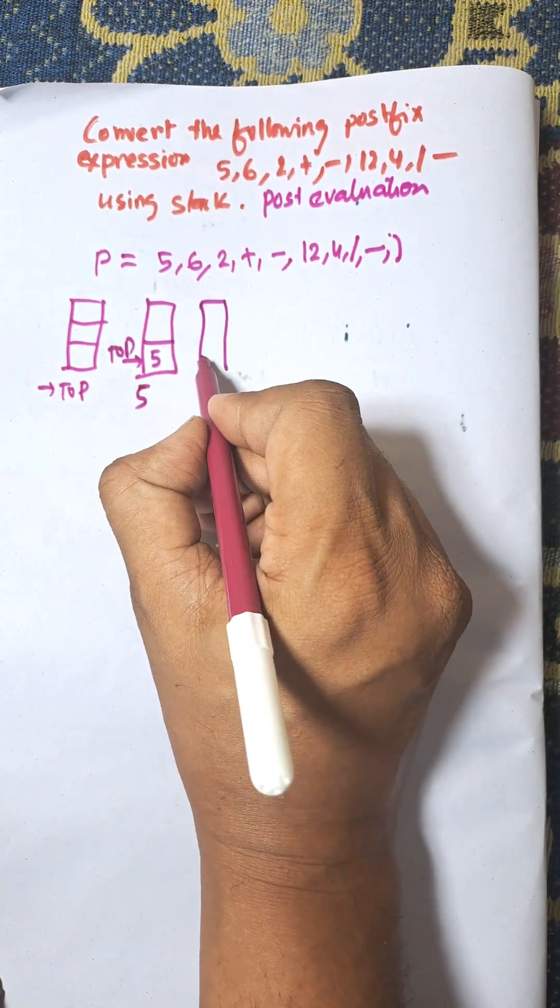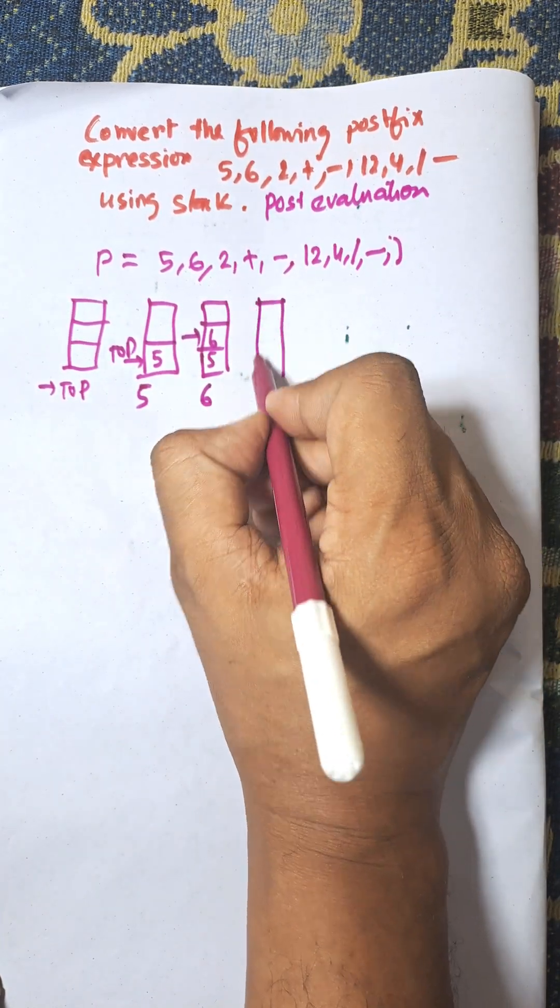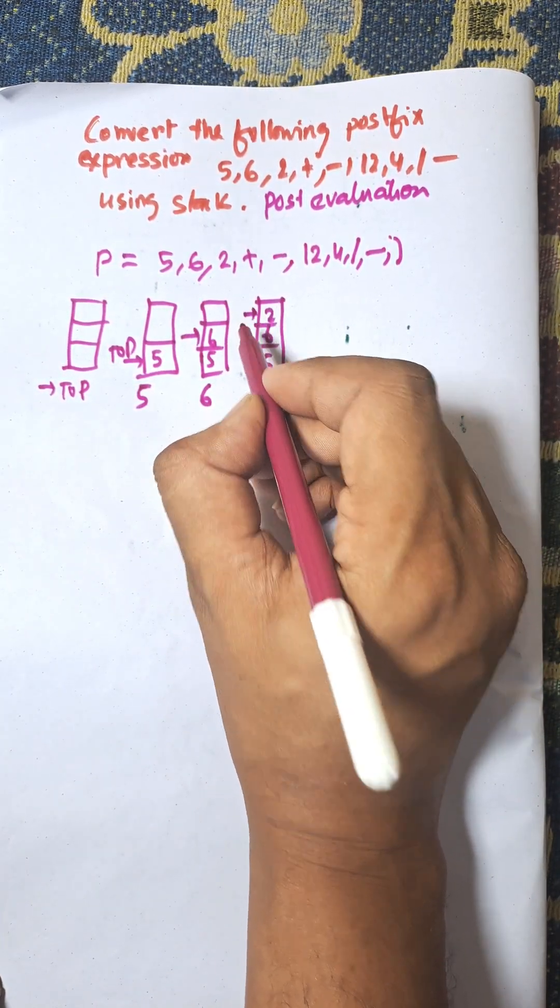Next, when 6 arrived, that is 5 and 6, top is incremented. Then, 2, that is 5, 6, and 2, top is incremented.